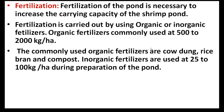Next is fertilization. Fertilization of the pond is necessary to increase the carrying capacity of the shrimp pond. It is carried out using organic and inorganic fertilizers to enrich the water with phytoplankton and zooplankton. Organic fertilizers such as cow dung, rice bran, and compost are commonly used at 500 to 2000 kg per hectare, and inorganic fertilizers at 25 to 100 kg per hectare during pond preparation.